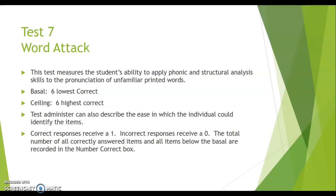Basal is six lowest correct, and the ceiling is six highest correct. And like the other tests, the test administrator can also describe the ease in which the individual could identify the items. And as the other tests before, correct responses receive a one, incorrect responses receive a zero, and the total number of all correct items answered and all the items below the basal are recorded in the number correct box.